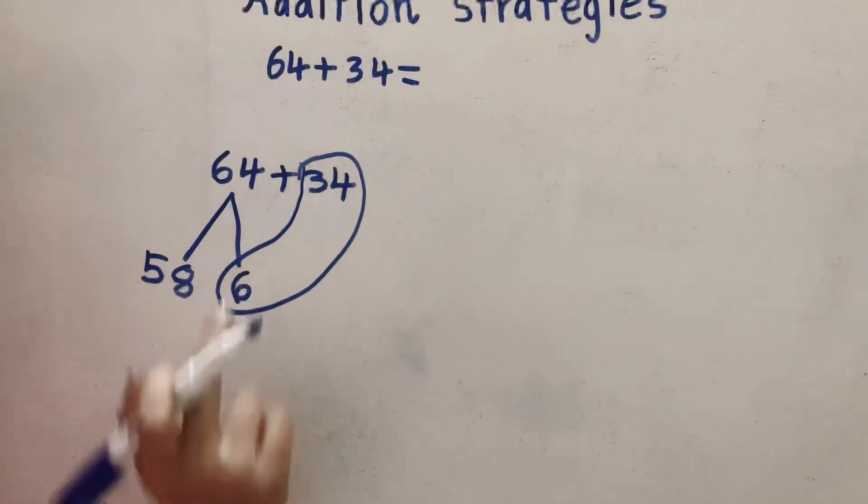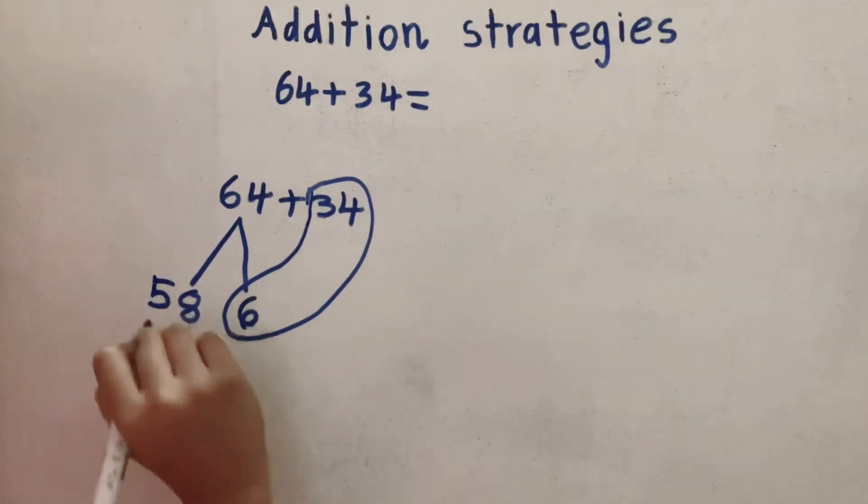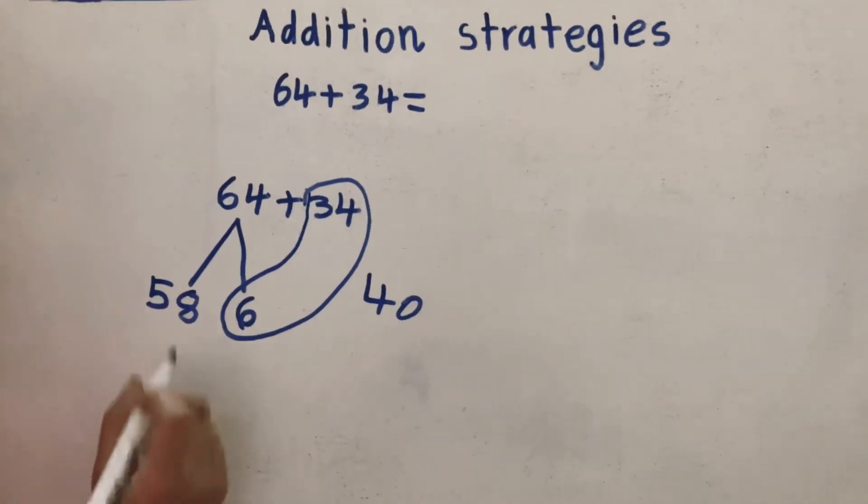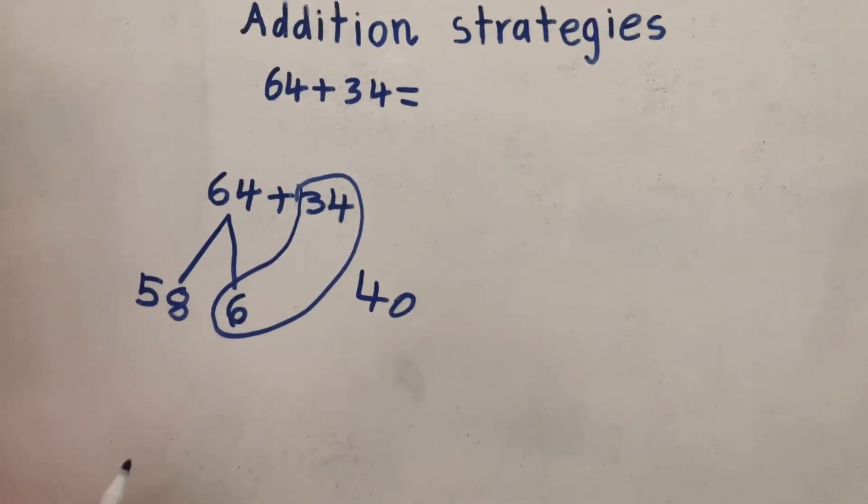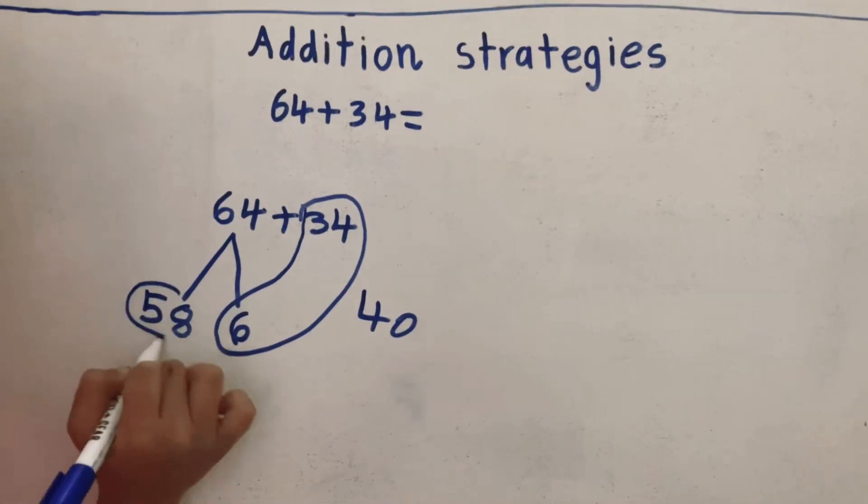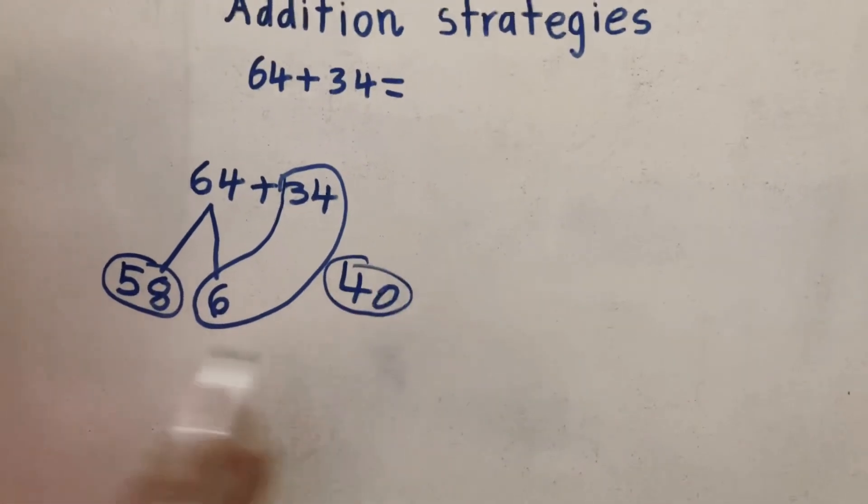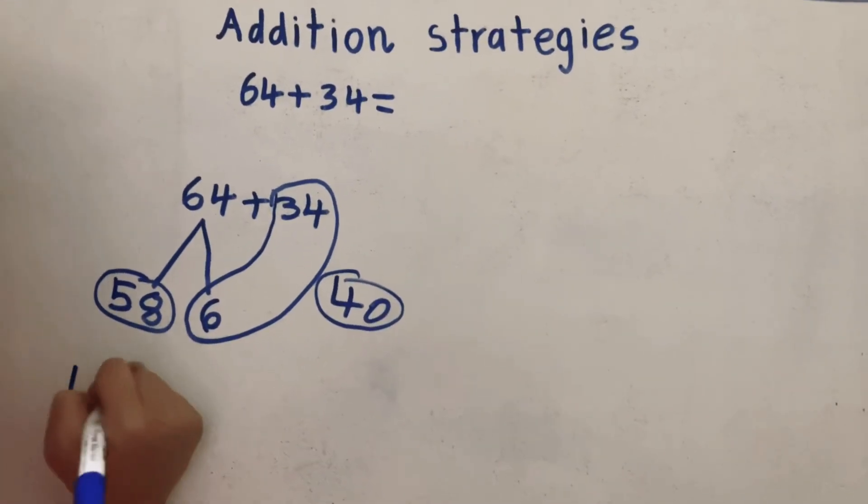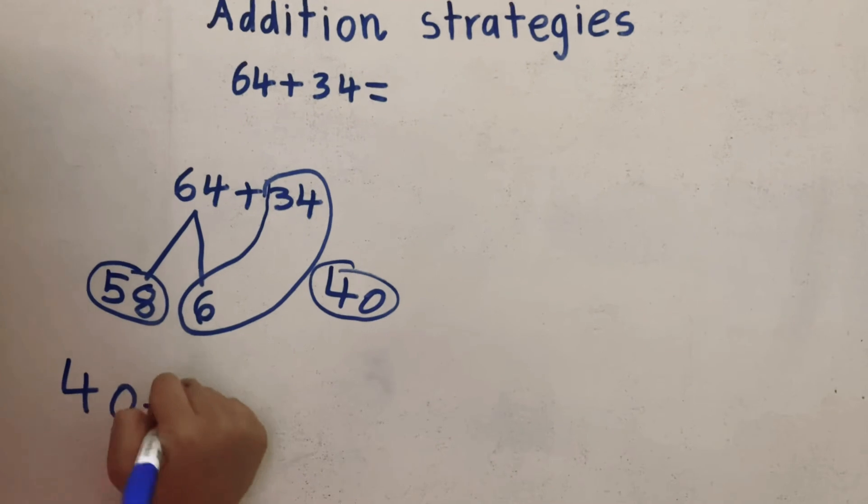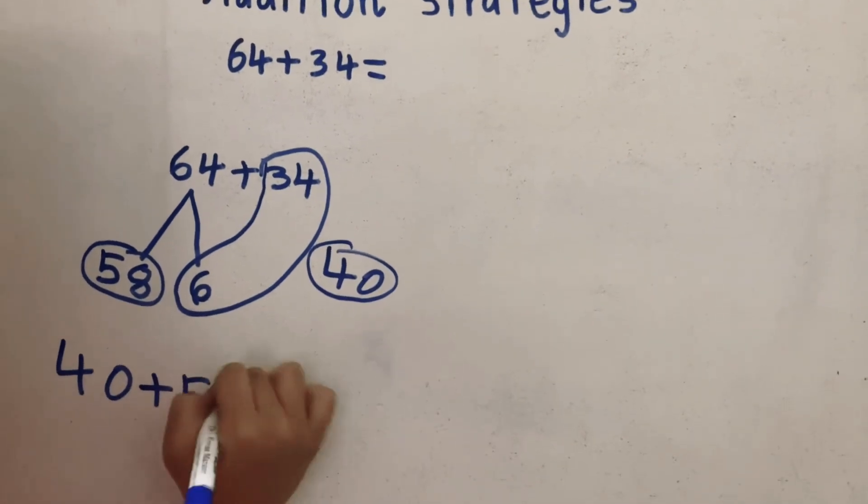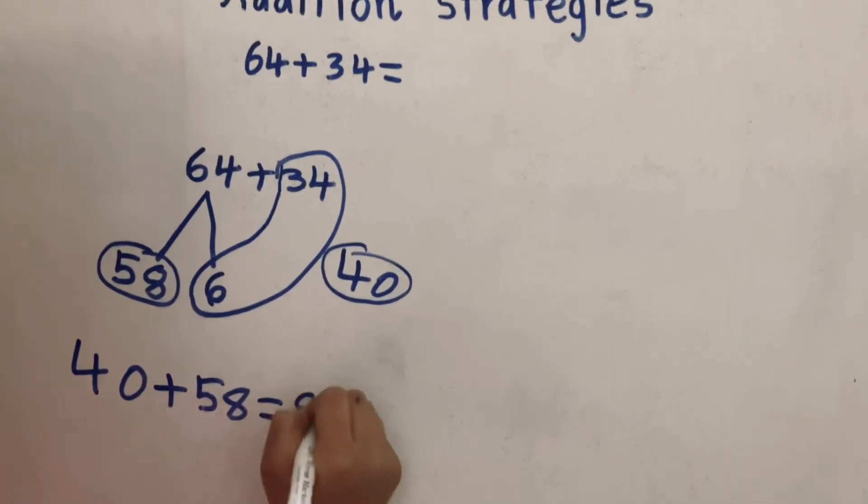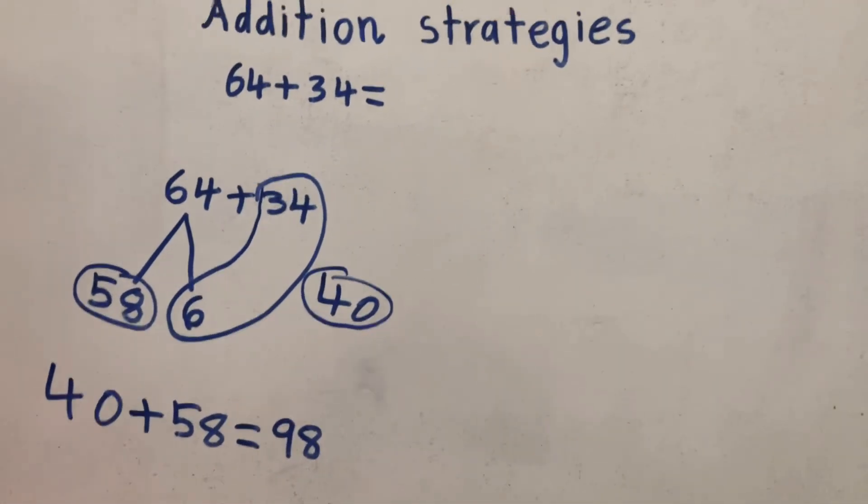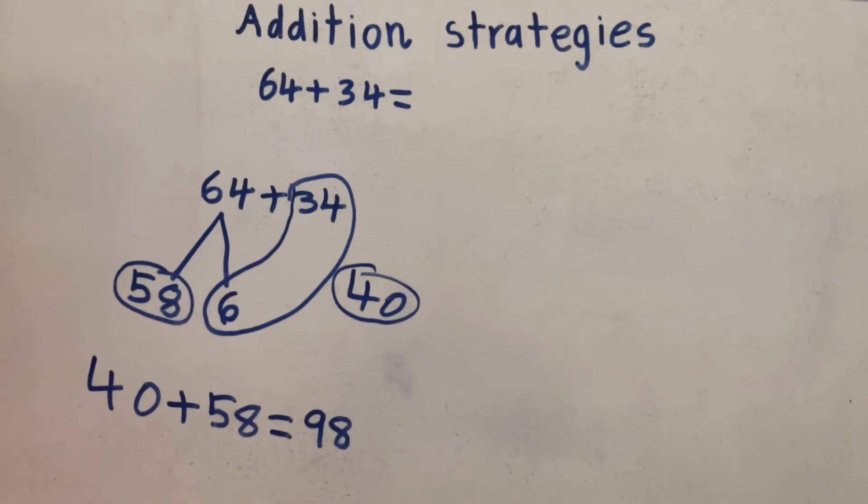And then you're just gonna add these two together which equals 40. So now we have two numbers which are 58 and 40. So now we're gonna add those numbers together. So 40 plus 58 equals 98. So this is another strategy and we got the same answer 98. So we're doing a good job on this one too.